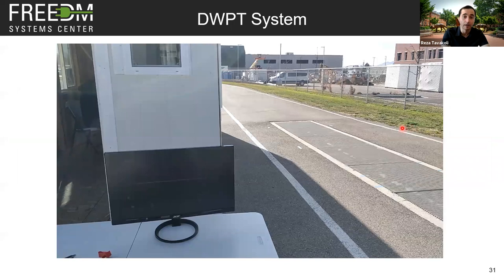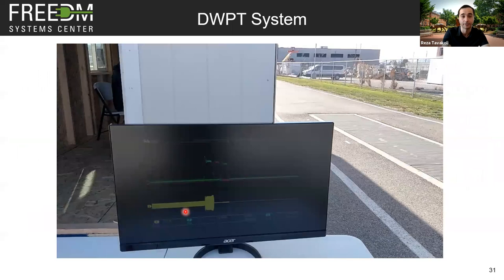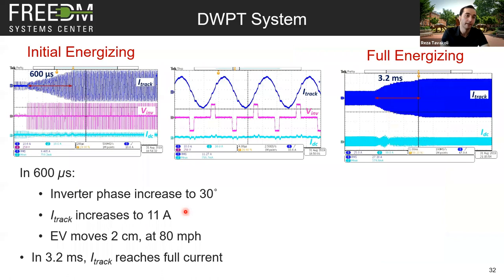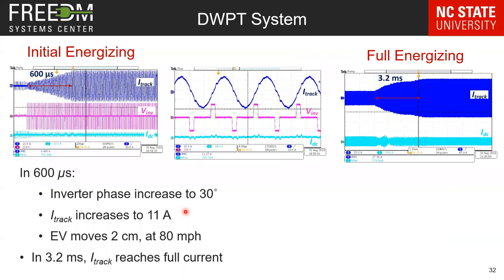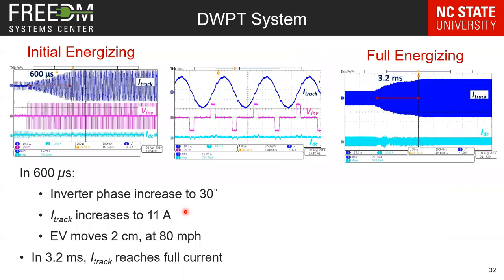A video of the test shows the first track current energized with lower current, then three pads energized one after another. A question: how deep are the coils embedded in the roadway? They are about two inches deep — that's the minimum practical depth. No special protection for the coils from backfill was applied in this setup.